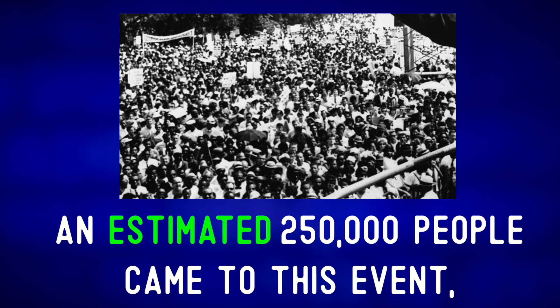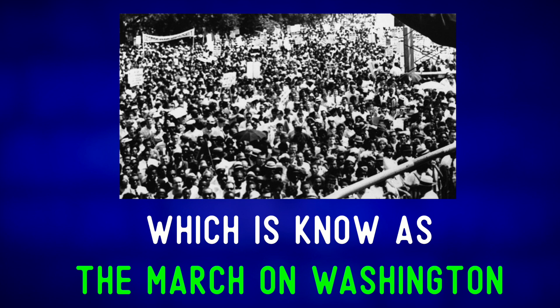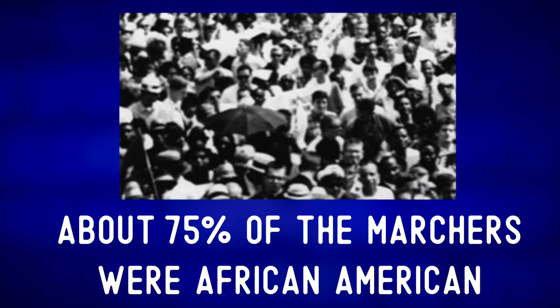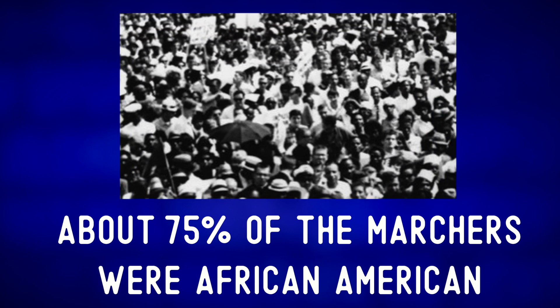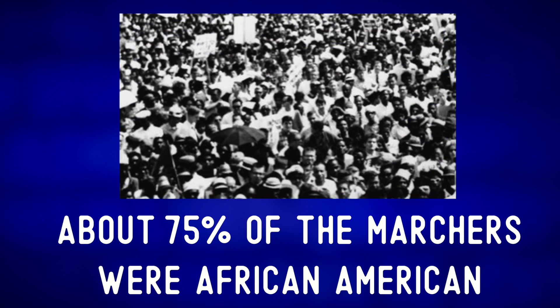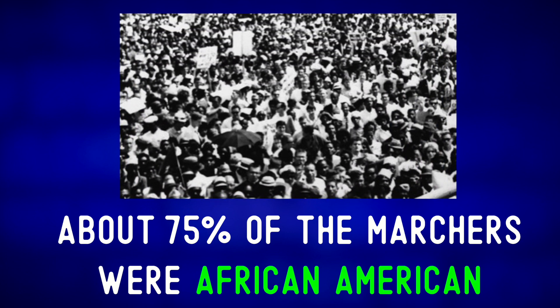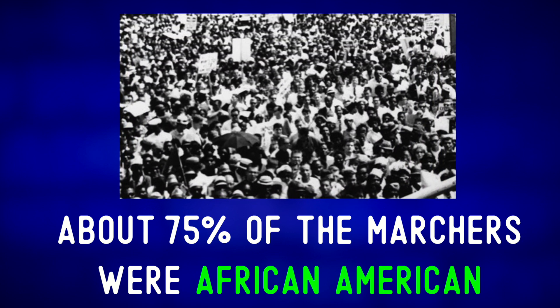An estimated 250,000 people came to this event, which is known as the March on Washington. About 75% of the marchers were African American. African American.